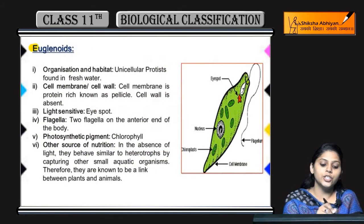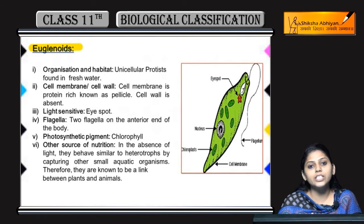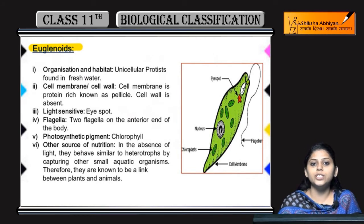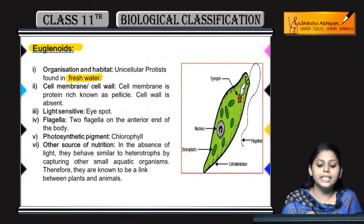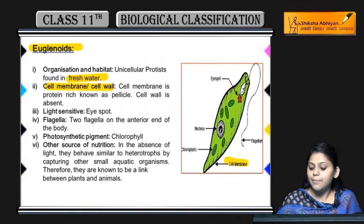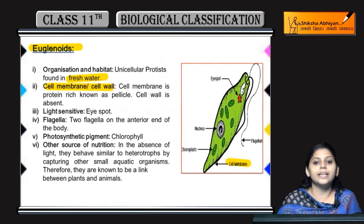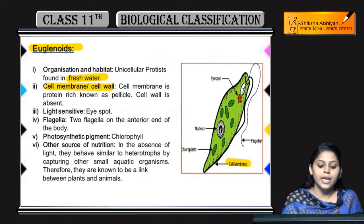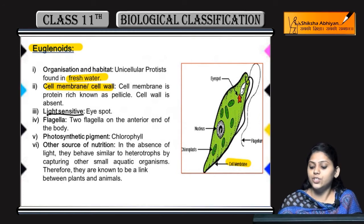Next, coming to euglenoids. Euglenoids ki organization aur habitat kaisi hai? Organization toh iski bhi unicellular eukaryotes hi hongi, because yhe Protista hai, and they live in fresh water. Cell wall absent hoti hai, aur jo yhe cell membrane hai isse bolte hai pellicle. Kuch light sensitive regions hote hai jinhein eye spot bolte hai.